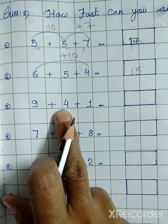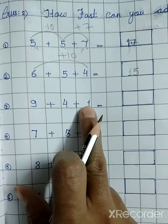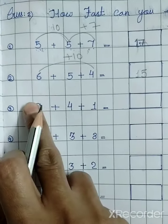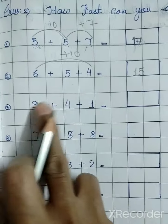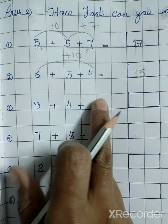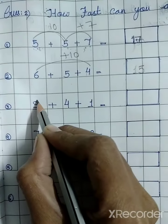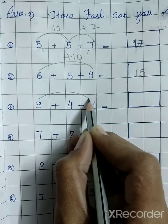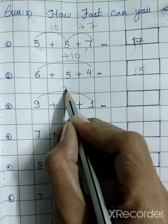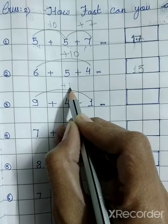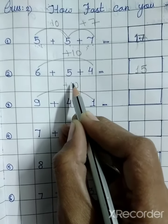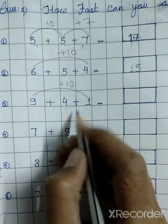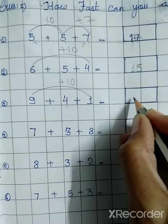Next: 9 plus 4 plus 1. Is type se hum first aur third number ko add kar lenge — 9 plus 1 is equal to 10. 10 mein agar hum 4 add karte hain toh hamare paas kya aayega? 14. (We add first and third numbers: 9+1=10, then 10+4=14.)